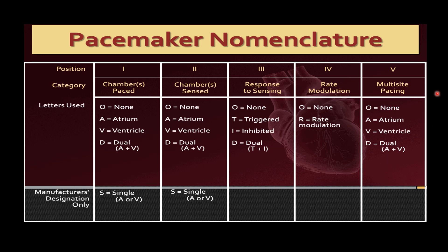For a permanent pacemaker, there is a fourth position for rate modulation: O for none, R for rate modulation. The fifth position is multi-site pacing: O for none, A for atrium, V for ventricle, D for dual atrium plus ventricle. Our concern in this lecture is the temporary pacemaker, which uses only the first three positions.